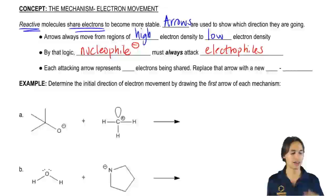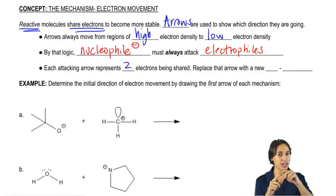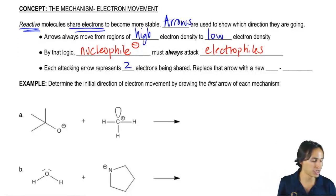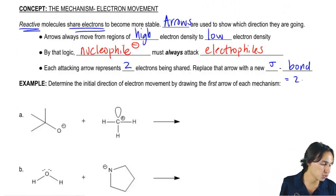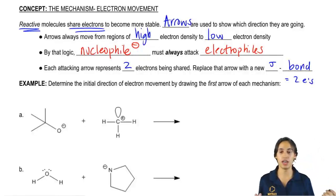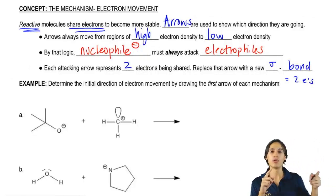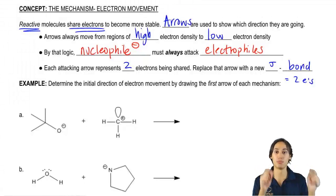So another thing is that each attacking arrow is going to represent two electrons that are being shared. So every time that I draw one of these arrows, that means that I'm sharing two electrons with another atom. And what that means is that after the reaction has taken place, I'm going to replace whatever that arrow was, I'm going to replace it with a new sigma bond. Why is that? Because remember that a sigma bond equals two electrons being shared. So what that means is that an arrow is really just a fancy way of drawing a sigma bond in motion. That means I'm creating a new sigma bond. Does that make sense so far?